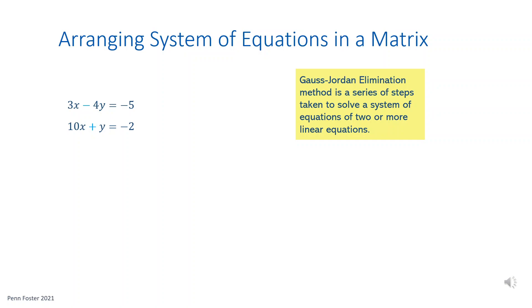The Gauss-Jordan method utilizes matrices to rearrange and reduce equations within the given system such that the equilibrium of the system is preserved while solving for the involved variables. To successfully use this method, first arrange the given system so that the x variables appear first, y variables next, then equal signs, then finally the constants on the left-hand sides of the equations.